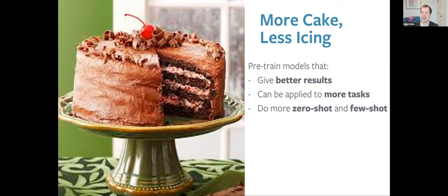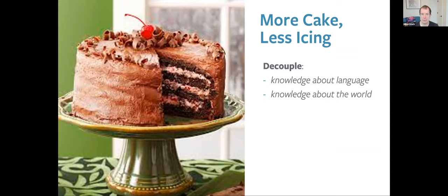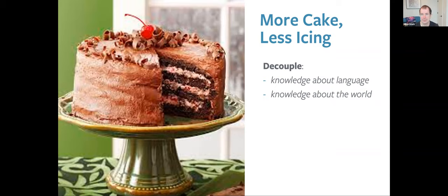We want to reduce supervised learning to as thin a layer as possible on top of representation learning. That gives us models which get dramatically better results than what was possible with supervised learning alone, opening up NLP to a wide range of tasks — in some cases, zero-shot or few-shot with no labeled examples at all. One of the themes is trying to decouple knowledge about language from knowledge about the world.